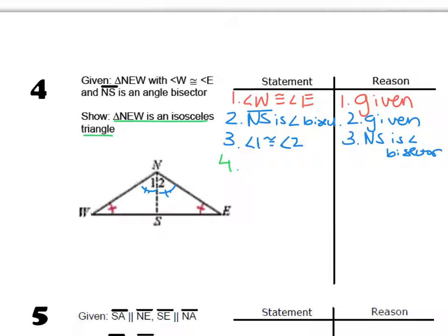So I'm going to say that NS is in both triangles, so it has to be congruent to itself. So either reflexive property or same side.